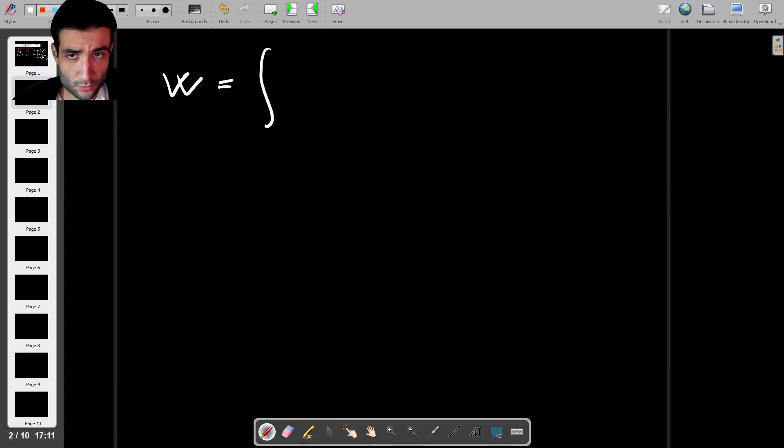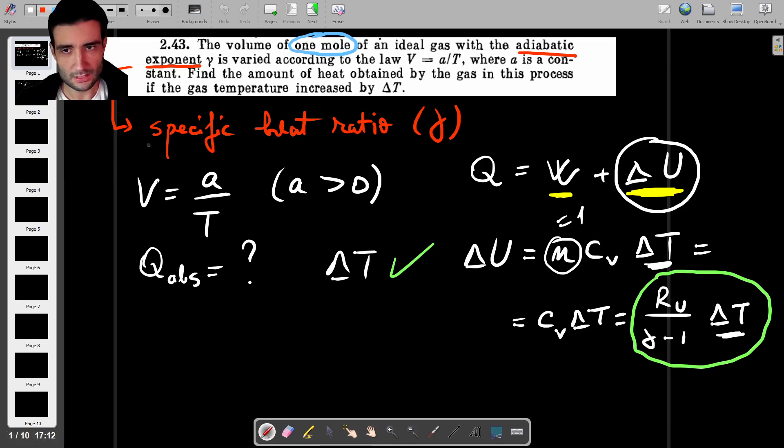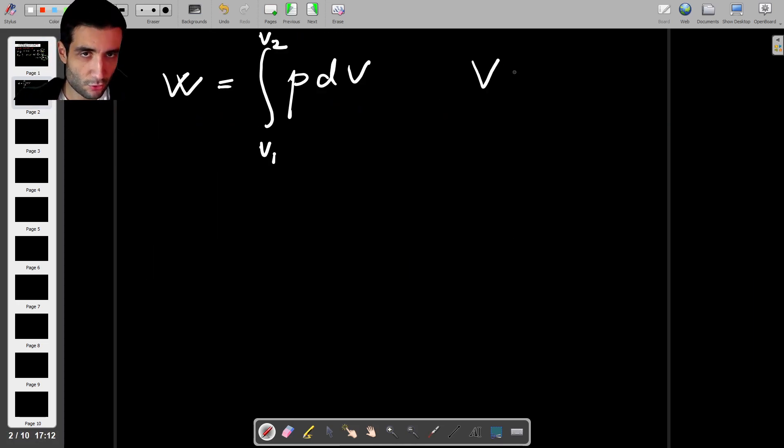So the formula for work as you probably know if you're doing any thermodynamics is it's the integral of PdV from V1 to V2. And because it's an integral it means it does actually depend on the process. But the question does tell us something about how the process looks like. It tells us that the volume is always proportional to the temperature.